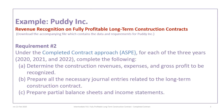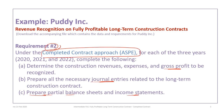This tutorial continues on with the Putty Inc. example, so please make sure that you download that file so you can follow along. The tutorial will focus on Requirement 2 of the Putty Inc. example and show how to determine gross profit, how to prepare the necessary journal entries, and prepare partial balance sheets and income statements under the completed contract approach, which is only acceptable under ASPE.